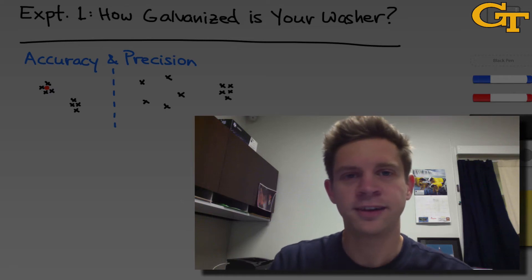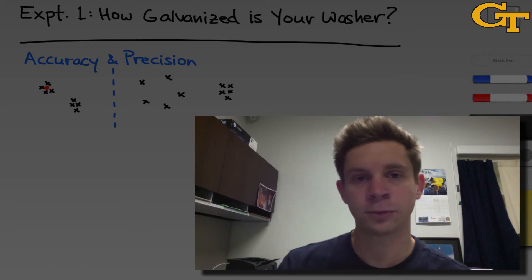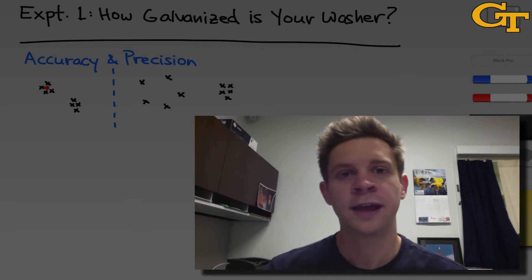Experiment 1 in Chem 1310 is titled How Galvanized Is Your Washer? In this experiment, we'll get a basic introduction to accuracy and precision, explore basic laboratory techniques and glassware that you'll use throughout the semester, and analyze the zinc content of a washer by subjecting it to a chemical reaction and looking at mass changes.